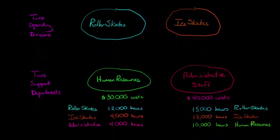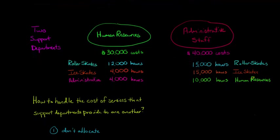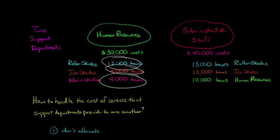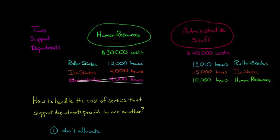With the direct method, we're basically just not going to allocate any of these inter-support departmental costs — we're going to completely ignore them. For example, the HR department's hours break down as follows: 12,000 hours on the roller skate division, 4,000 on the ice skate division, and 4,000 on the admin division. Because admin is another support department, we're just going to ignore it altogether.